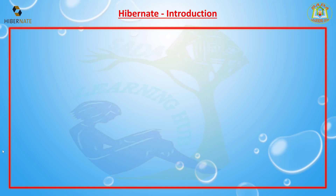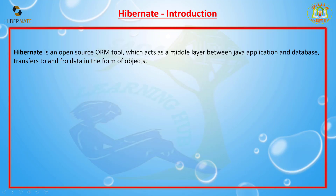First, I'm going to discuss what is Hibernate. Hibernate is an open source ORM tool — ORM tool means Object Relational Mapping tool — which acts as a middle layer between a Java application and a database, transferring data to and fro in the form of objects.